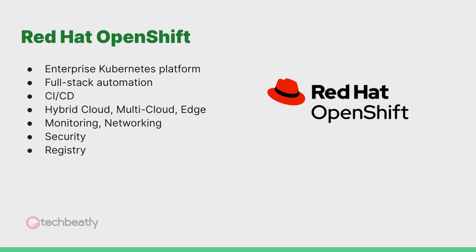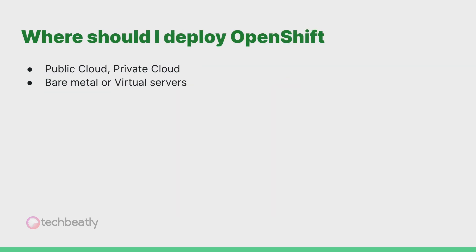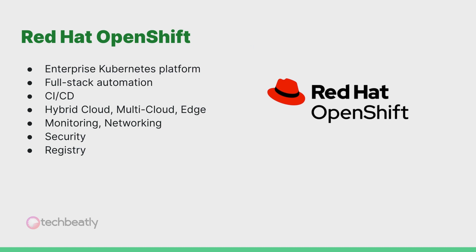So what is Red Hat OpenShift? Red Hat OpenShift is an enterprise Kubernetes container platform. It is a full-stack platform with automated operations to manage your applications on hybrid cloud, multi-cloud and edge. Red Hat OpenShift includes a lot of components such as container runtime, CI/CD, monitoring, networking, registry, authentication and authorization.